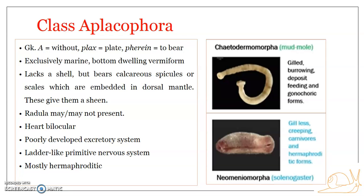Most members of Aplacophora are hermaphroditic — both male and female reproductive systems may be present in the same organism — but others are gonocoric, meaning male and female individuals are separate. When we go into the classification, we can see that the aplacophorans are divided into two subclasses: Chaetodermomorpha and Neomeniomorpha.